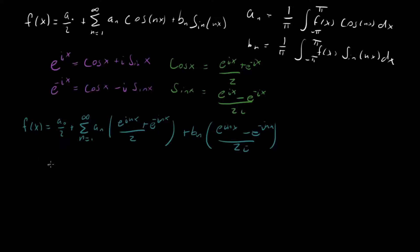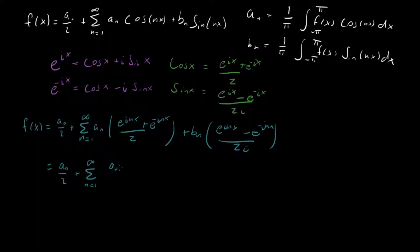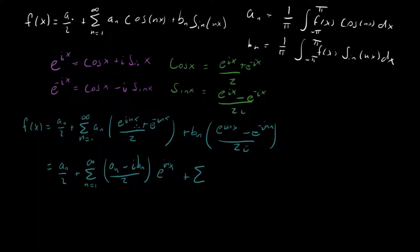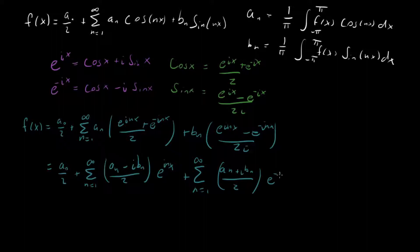Let's simplify this to get things in terms of just e to the inx and e to the minus inx. Note that 1 over i equals minus i, so I'll pull out a minus i. What we get is one sum from n equals 1 to infinity of (aₙ minus i bₙ) over 2 times e to the inx, plus a second sum of (aₙ plus i bₙ) over 2 times e to the minus inx.